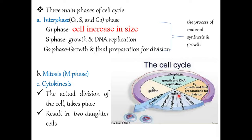After G2, the cell enters the mitosis phase. Here there will be division of chromatin material and chromosomes. After that, the last stage is cytokinesis — the actual division of the cell — which results in two daughter cells. DNA replication takes place during the interphase stage of the cell cycle, especially at S phase, where DNA replicates itself.